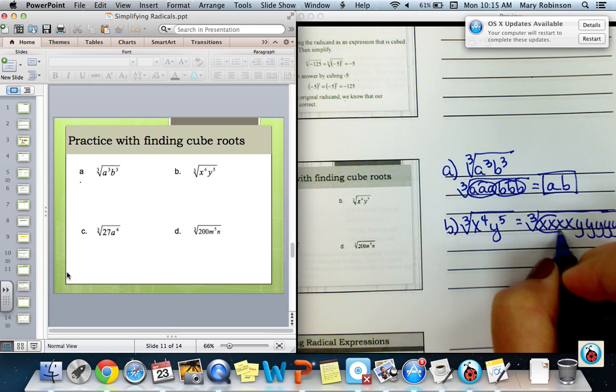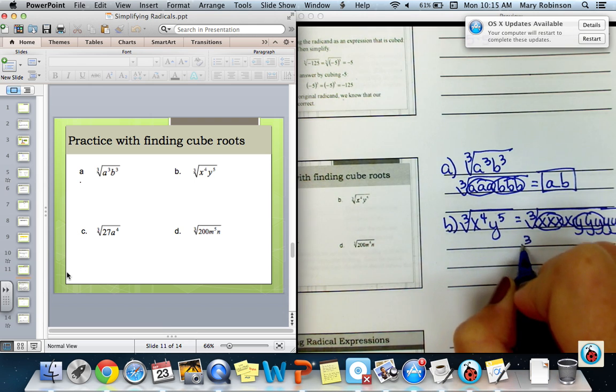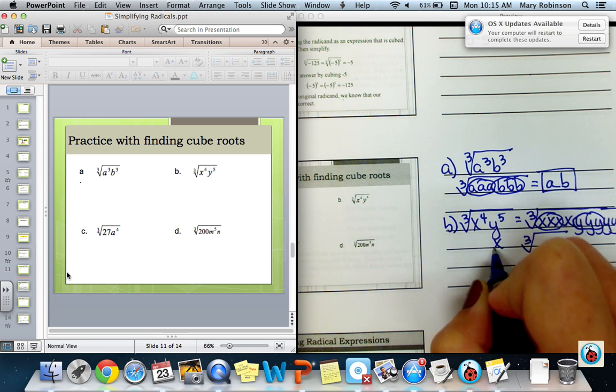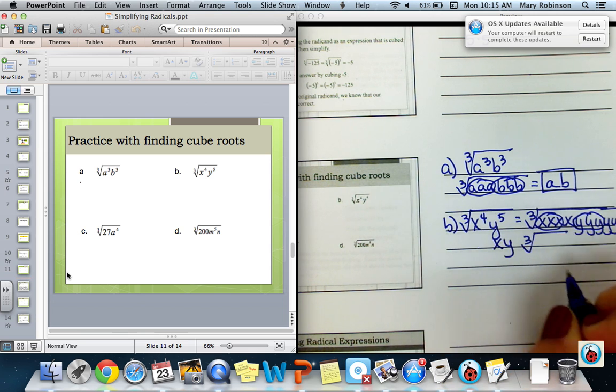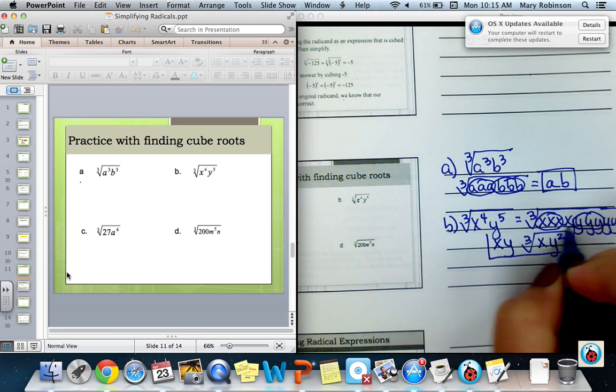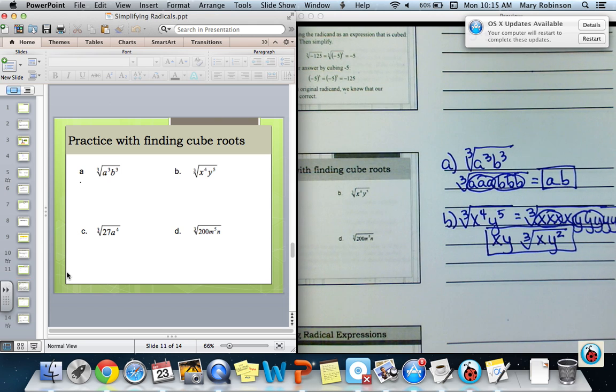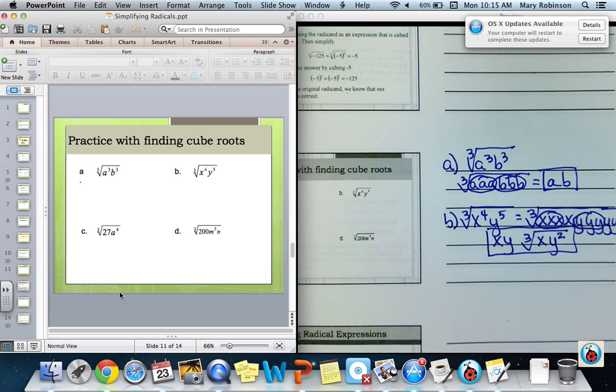So if I write them all out, I'll have one group of X's, one group of Y's. An X comes out, a Y comes out, leaving an X and 2 Y's, which I write as Y squared. So X, Y times the cube root of X, Y squared. And we'll stop at this point. I'll see you next time.